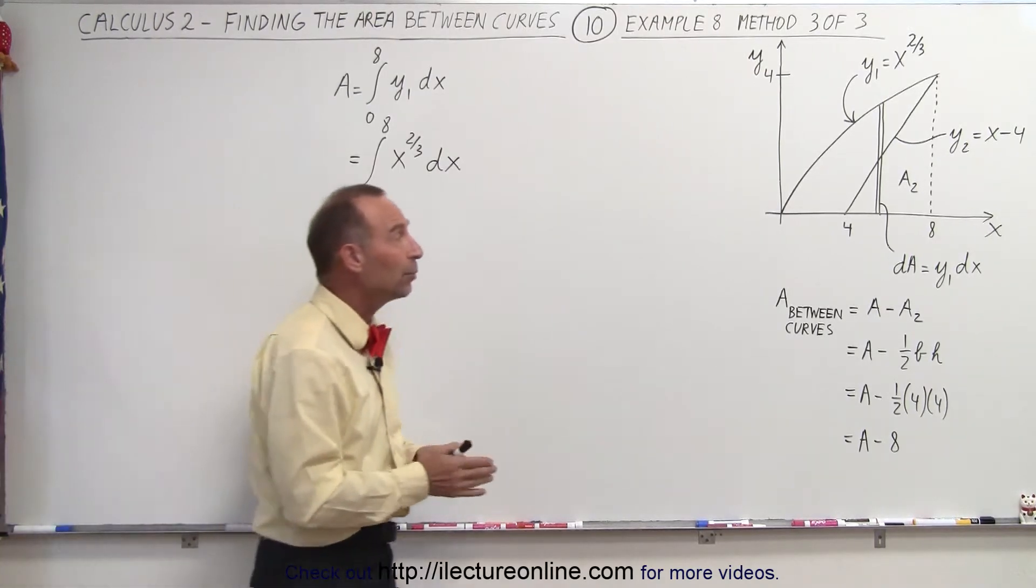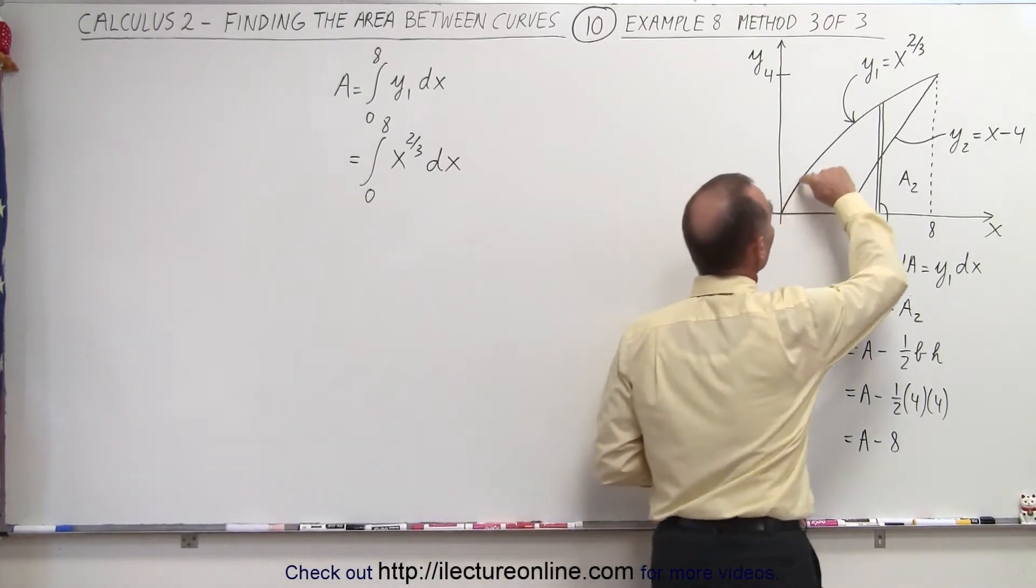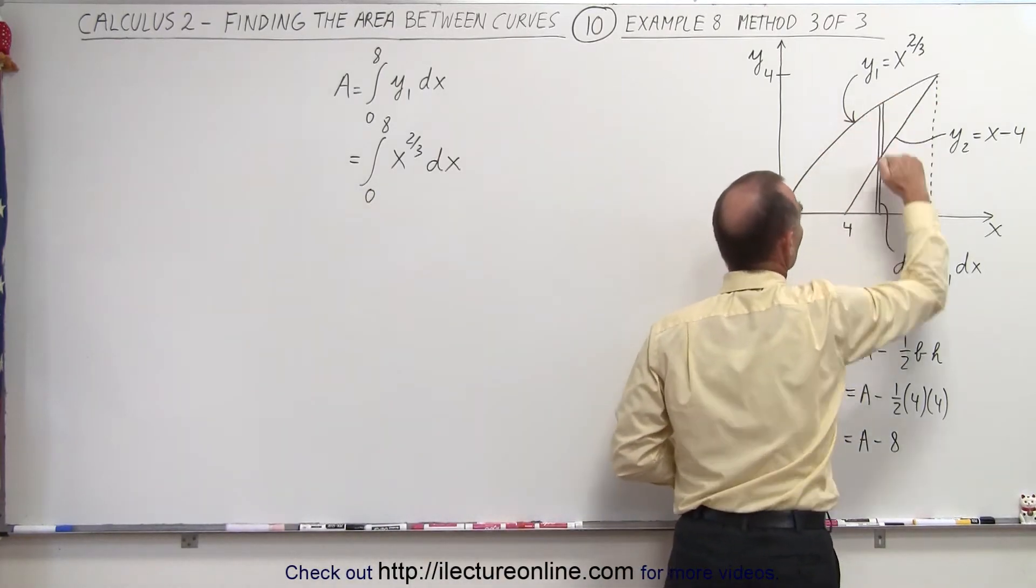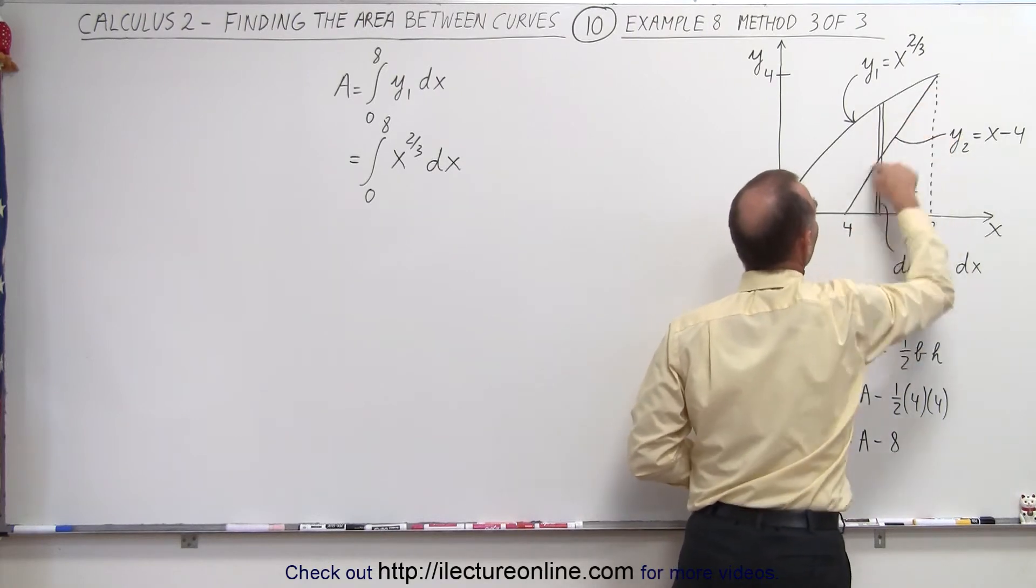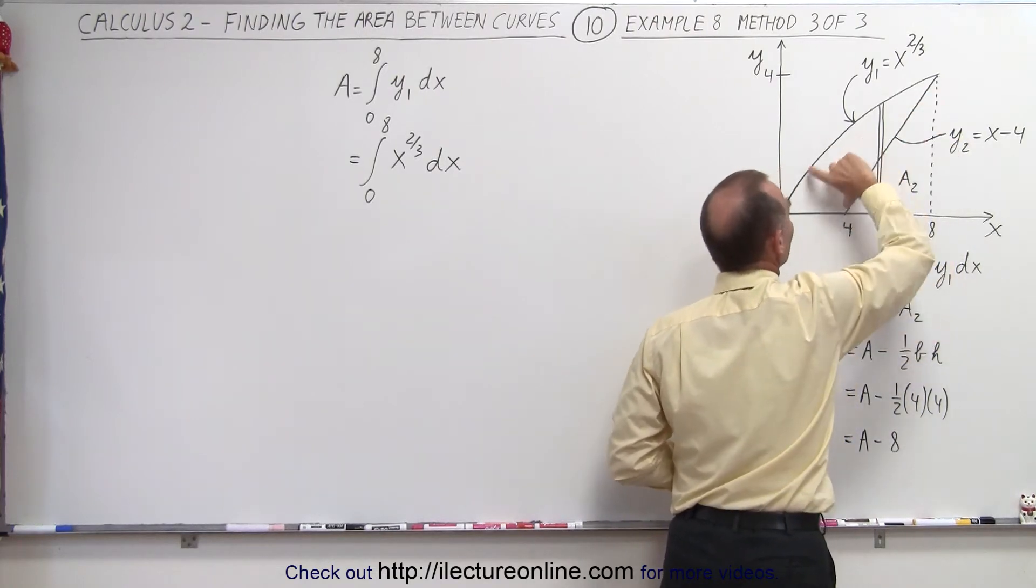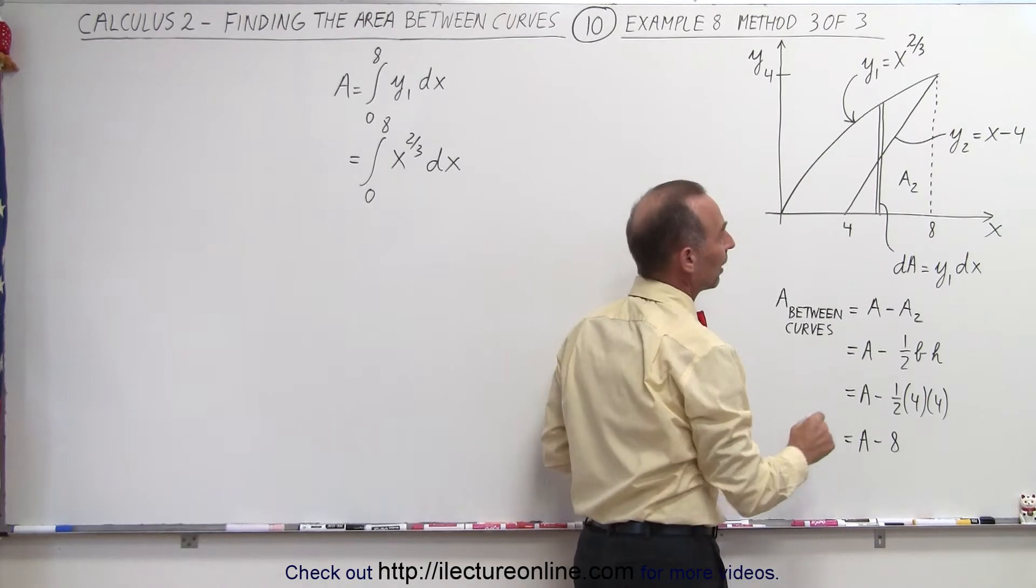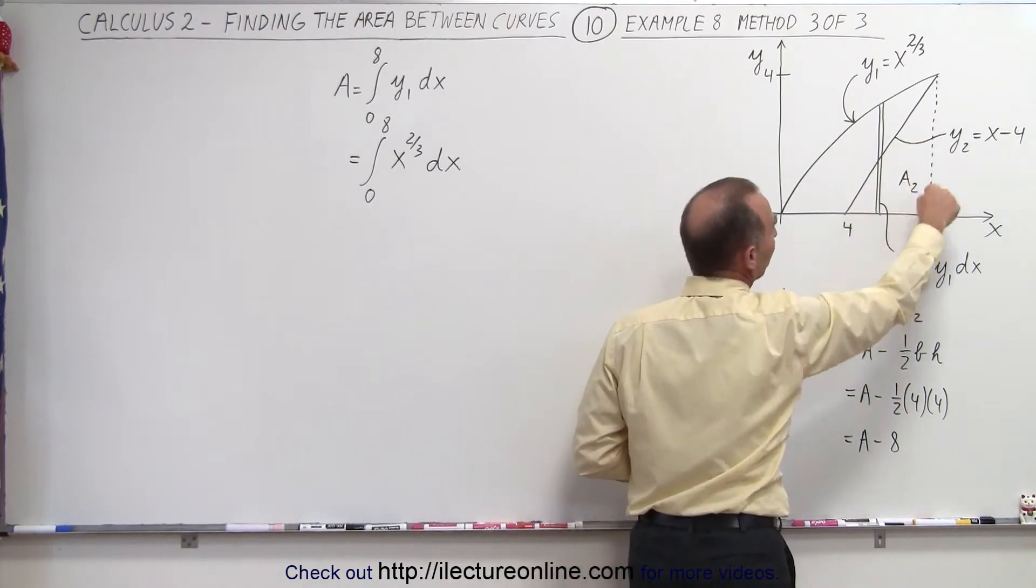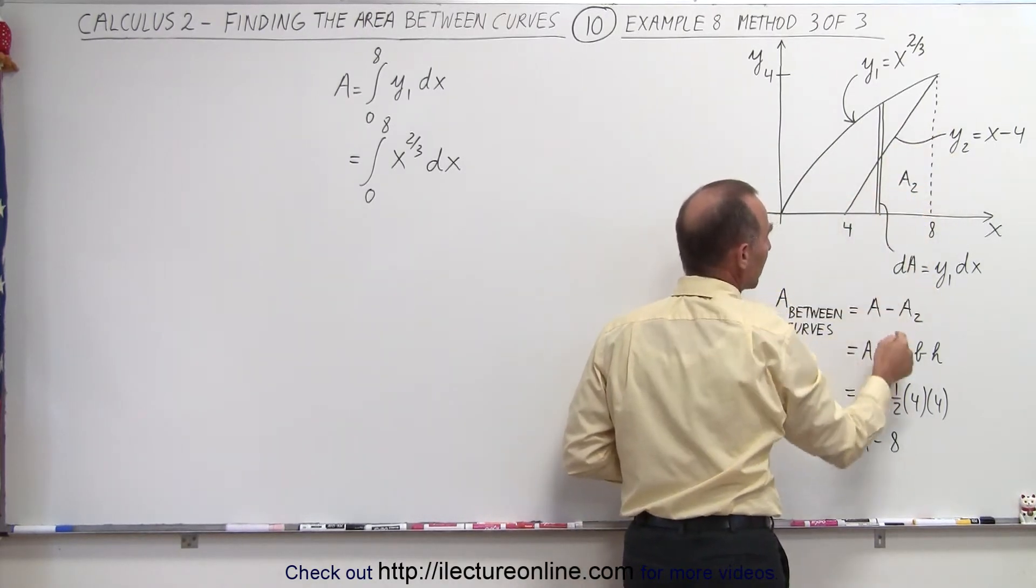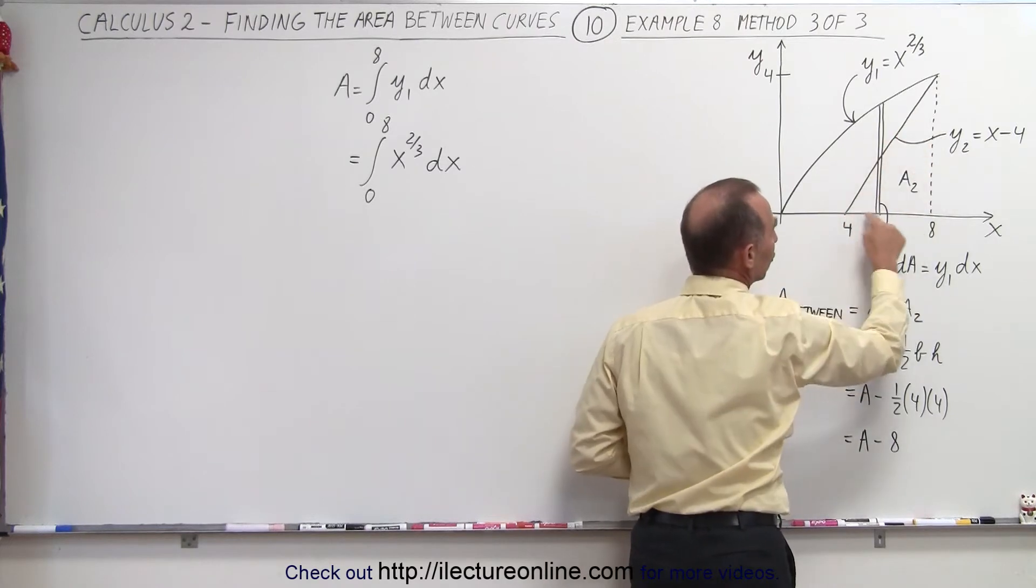What we can do is we can simply find the total area underneath this curve between the curve and the x-axis, and then subtract from that the area over here, which gives us the area between the two curves. The area here, which we denote by A2, can simply be equal to the area of a triangle.